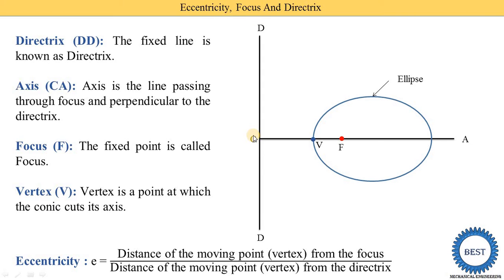The value of eccentricity is different for ellipse, hyperbola, and parabola. For the ellipse, the distance VF is smaller and VC is larger. For example, if VF is 1 cm and VC is 4 cm, then E = 1/4 = 0.25, which is less than 1. So eccentricity of the ellipse is always less than 1, and this value remains constant.